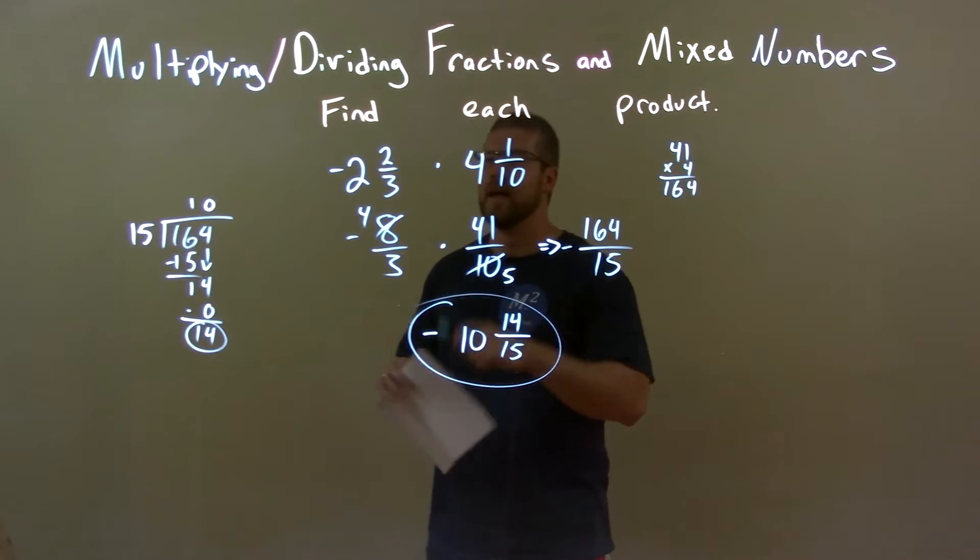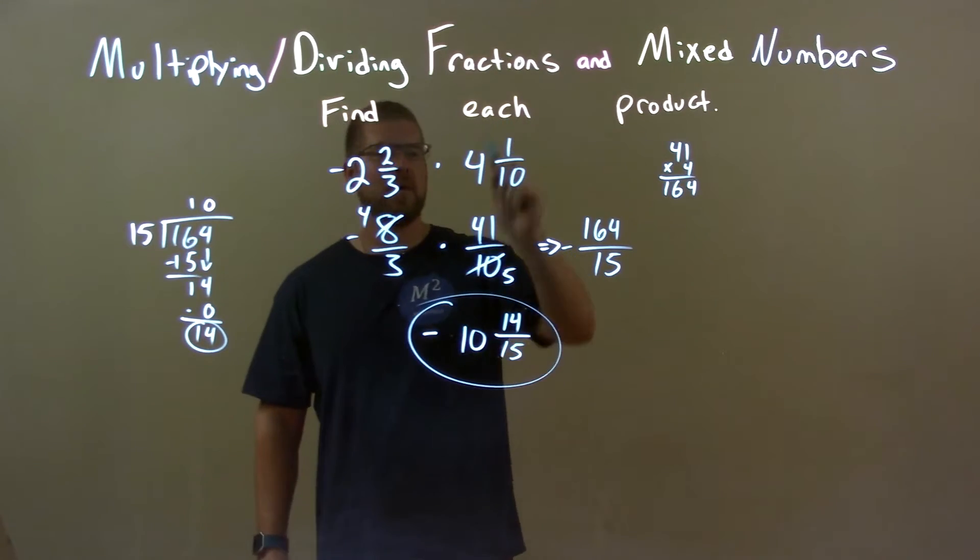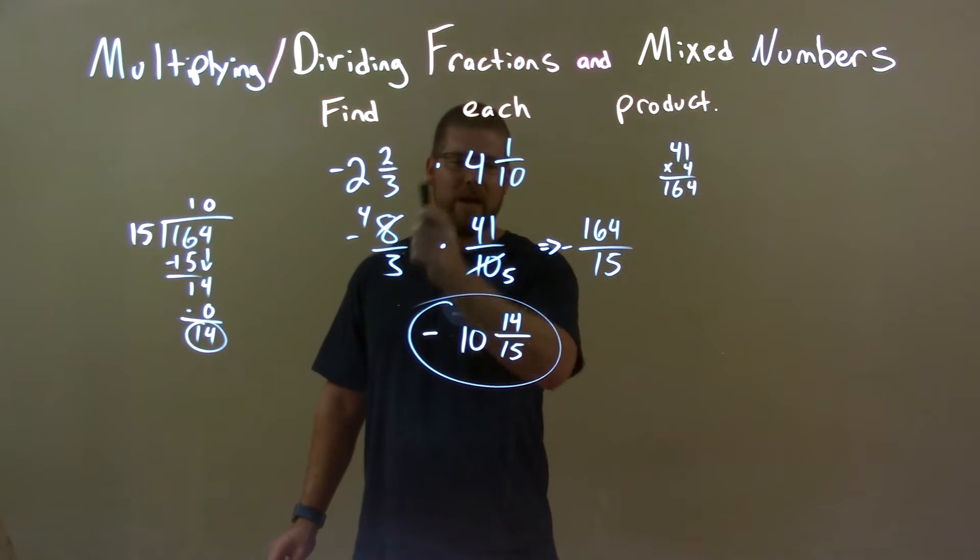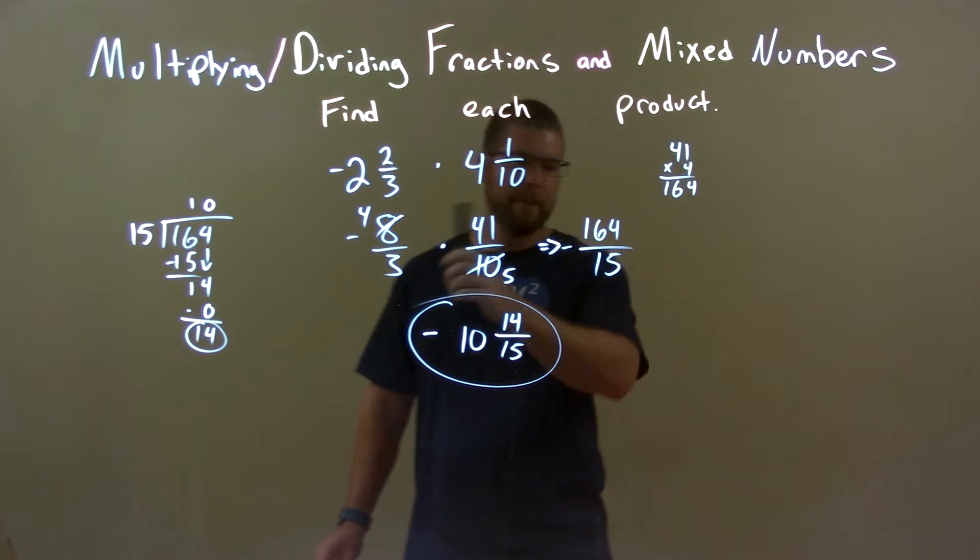Quick recap: we're given negative 2 and 2 thirds times 4 and 1 tenth. I convert those to improper fractions, and we have them as such. I simplify it a little bit and multiply it out.